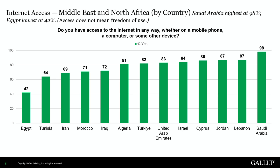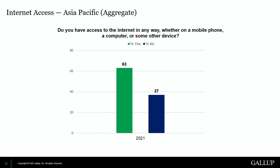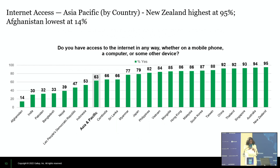The next region is Asia Pacific. The aggregate view shows 63% access, with 37% saying no. The Asia Pacific region includes about 23 countries. New Zealand is at the highest level at 95%, and Afghanistan — no surprise — at the lowest with 14%.